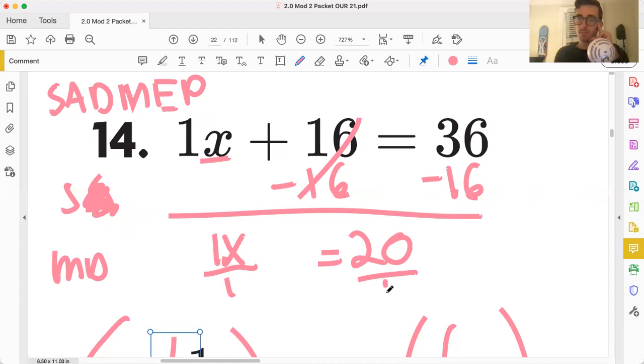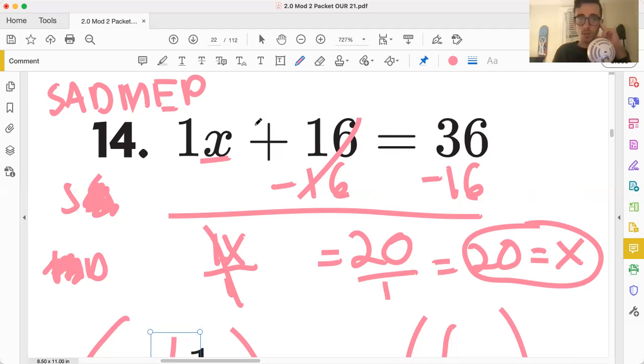It won't hurt. It's a good habit to get into, even though it's just 1X. You could have just left it, but 20 divided by 1 is just 20, leaving X as our answer. Capisce? Sound good? So SADMEP, a good way to approach two-step equations where there's an X term and some other constant.